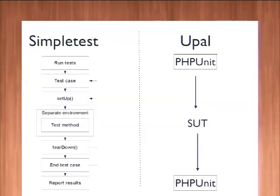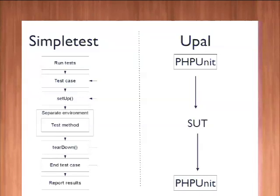After that, there's a teardown. And rinse and repeat until all of the specified classes are tested. On the right-hand side, you have a simpler flow for testing, which is to say that you run the command line PHPUnit program. That's another open source project — super popular in the PHP community as a test runner.